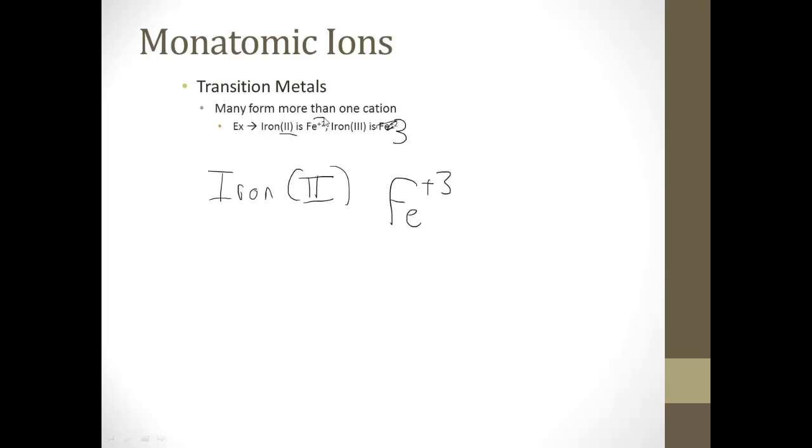So any time there's a number in the parentheses, it tells you the positive charge of the cation for that transition metal. So for these, to see all of these, I'm not going to expect you to memorize anything, because it's all on your periodic table.